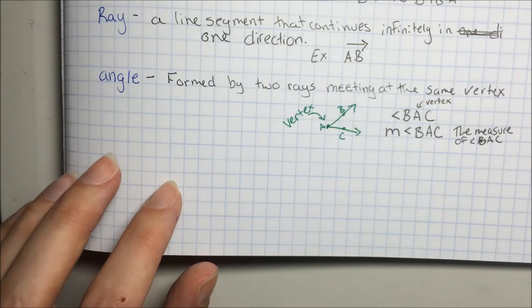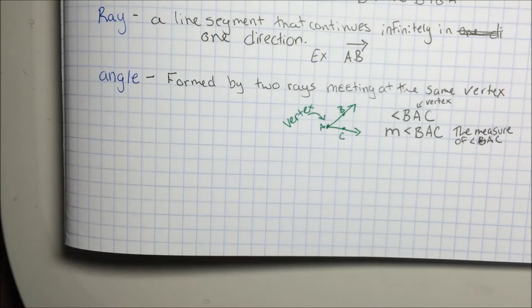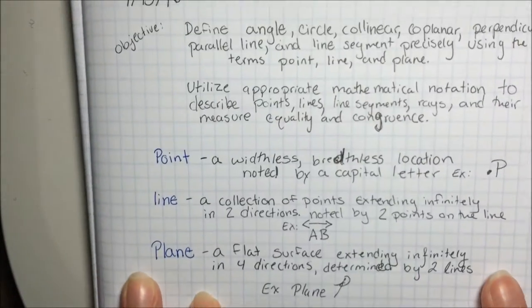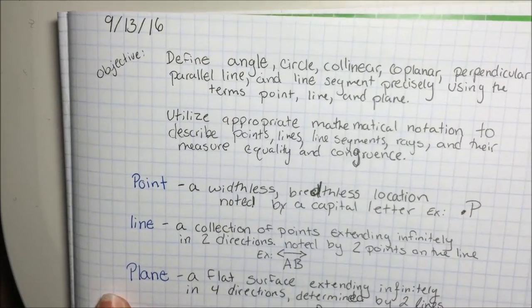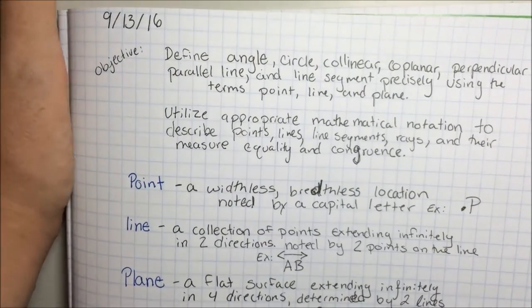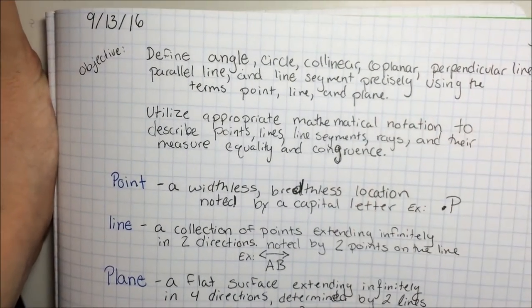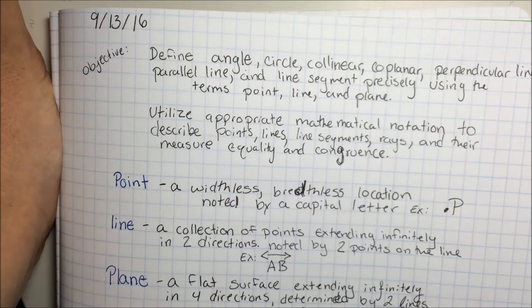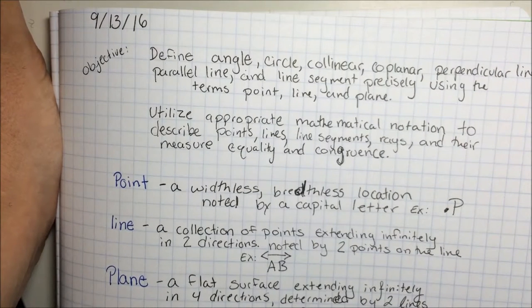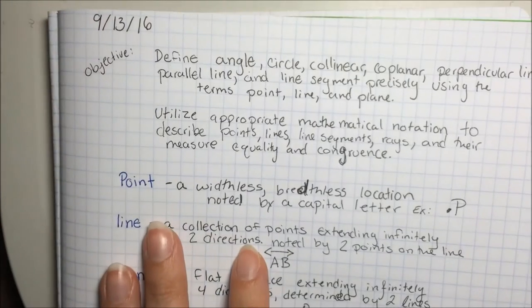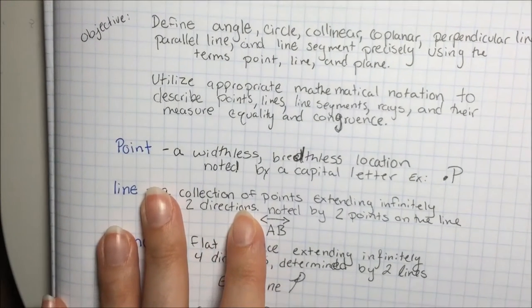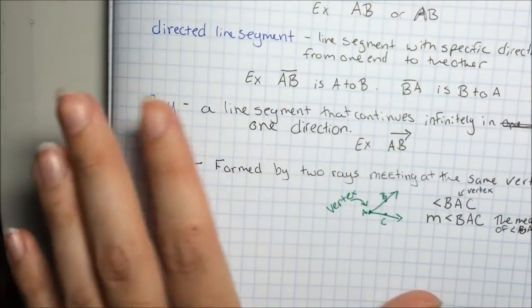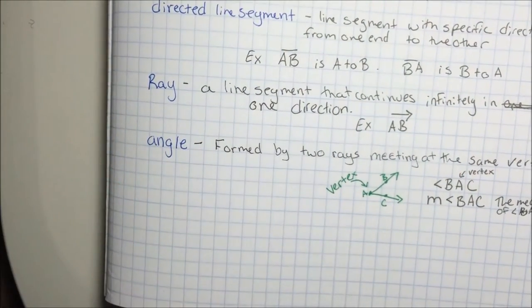Hello, and welcome back to the rest of this lesson. We started this lesson in class with the objectives to define angle, circle, collinear, coplanar, perpendicular, line, parallel line, and line segment precisely using the terms point, line, and plane, and utilize appropriate mathematical notation to describe points, lines, line segments, and their measure, equality, and congruence. So we're going to finish up our definitions here together.